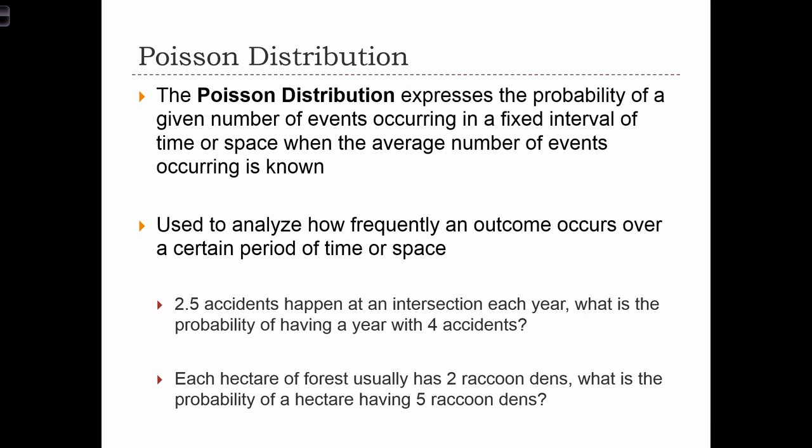Or if we know that each hectare of forest on average has 2 raccoon dens, what is the probability of finding a hectare having 5 raccoon dens? So here we see that the average number of events is known within some time period or within some area, and we want to know what's the probability of seeing some other number of events occurring in that area or time period.